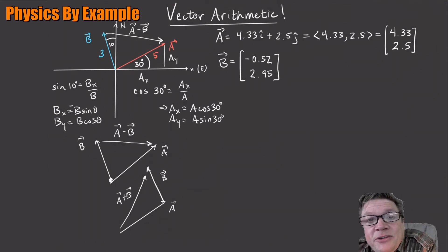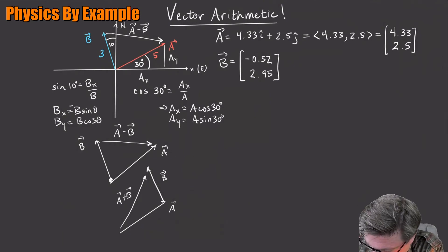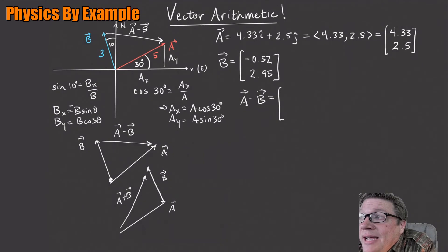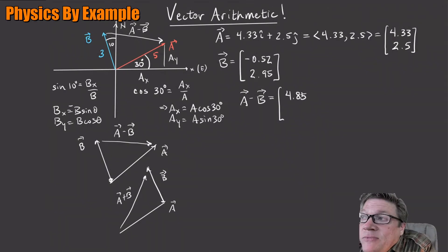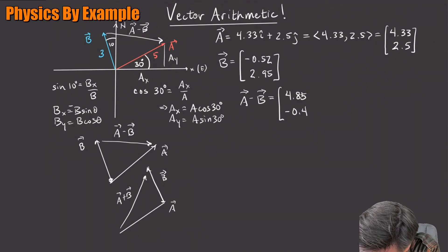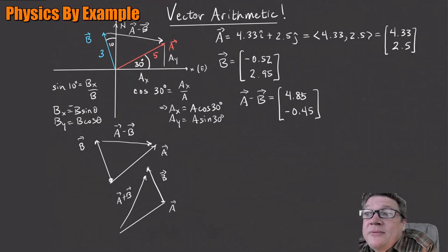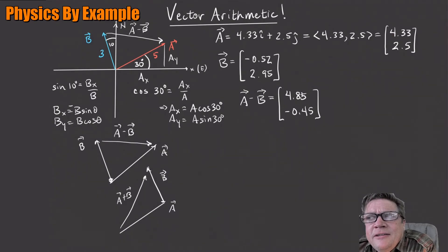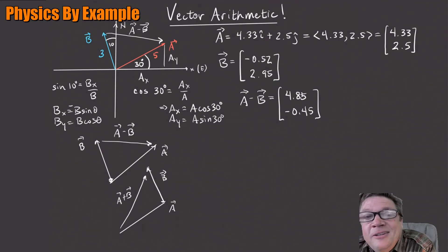Now we're all set — it's easy. If I want to do A minus B, I just subtract the components: AX minus BX. That looks like 4.33 minus (minus 0.52), which gives 4.85. And then 2.5 minus 2.95 gives minus 0.45. That's the vector A minus B. When you get the components, look at it and see if it makes sense. The X component is positive because the vector is pointing to the right, and A minus B is pointing a little bit down, so having minus 0.45 makes sense.